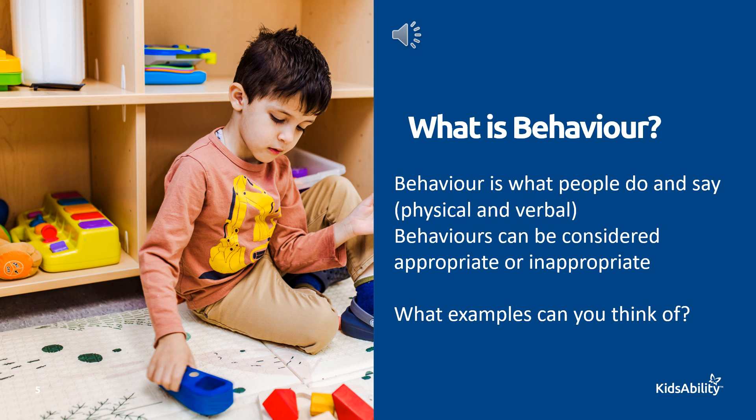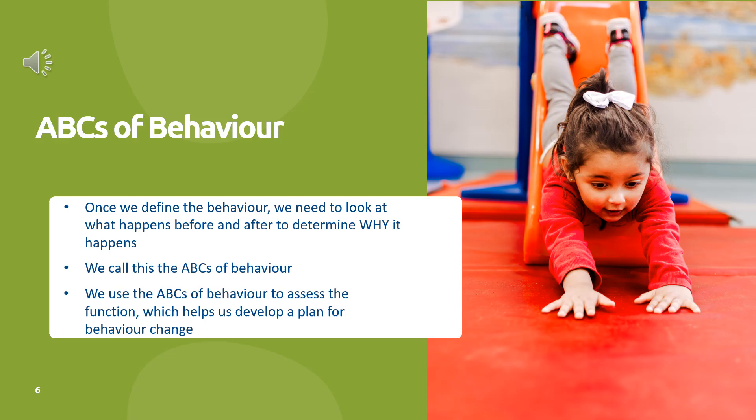Here are some examples of inappropriate behavior: screaming, climbing to access a toy, hitting others or yourself. Once we name and define the behavior, we observe it in more detail to see if there are any correlations or patterns in events that take place immediately before or after the behavior occurs. This helps us determine the function of the behavior — essentially why it's happening and how the behavior is being reinforced, so we can start looking at ways to modify it.